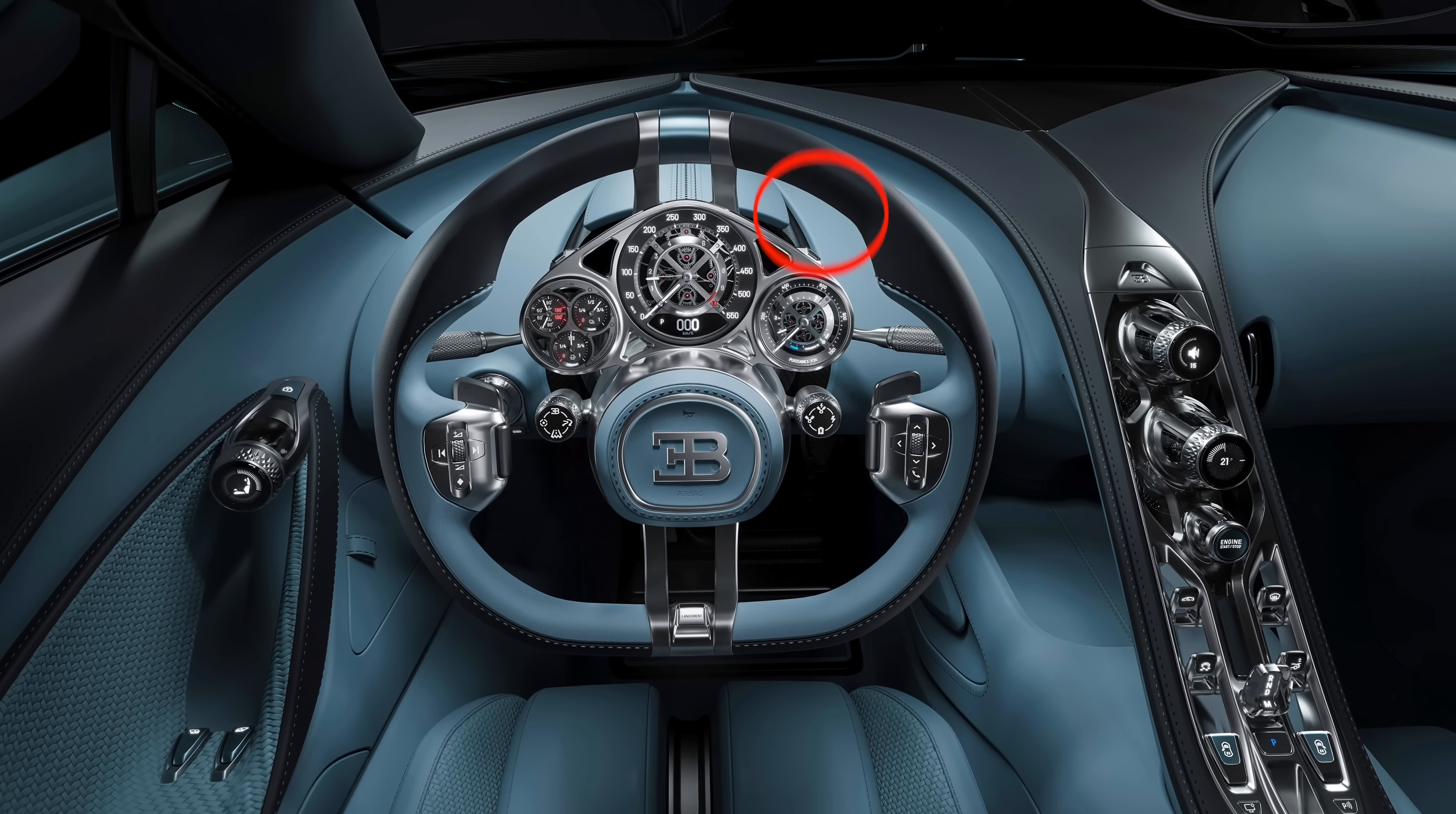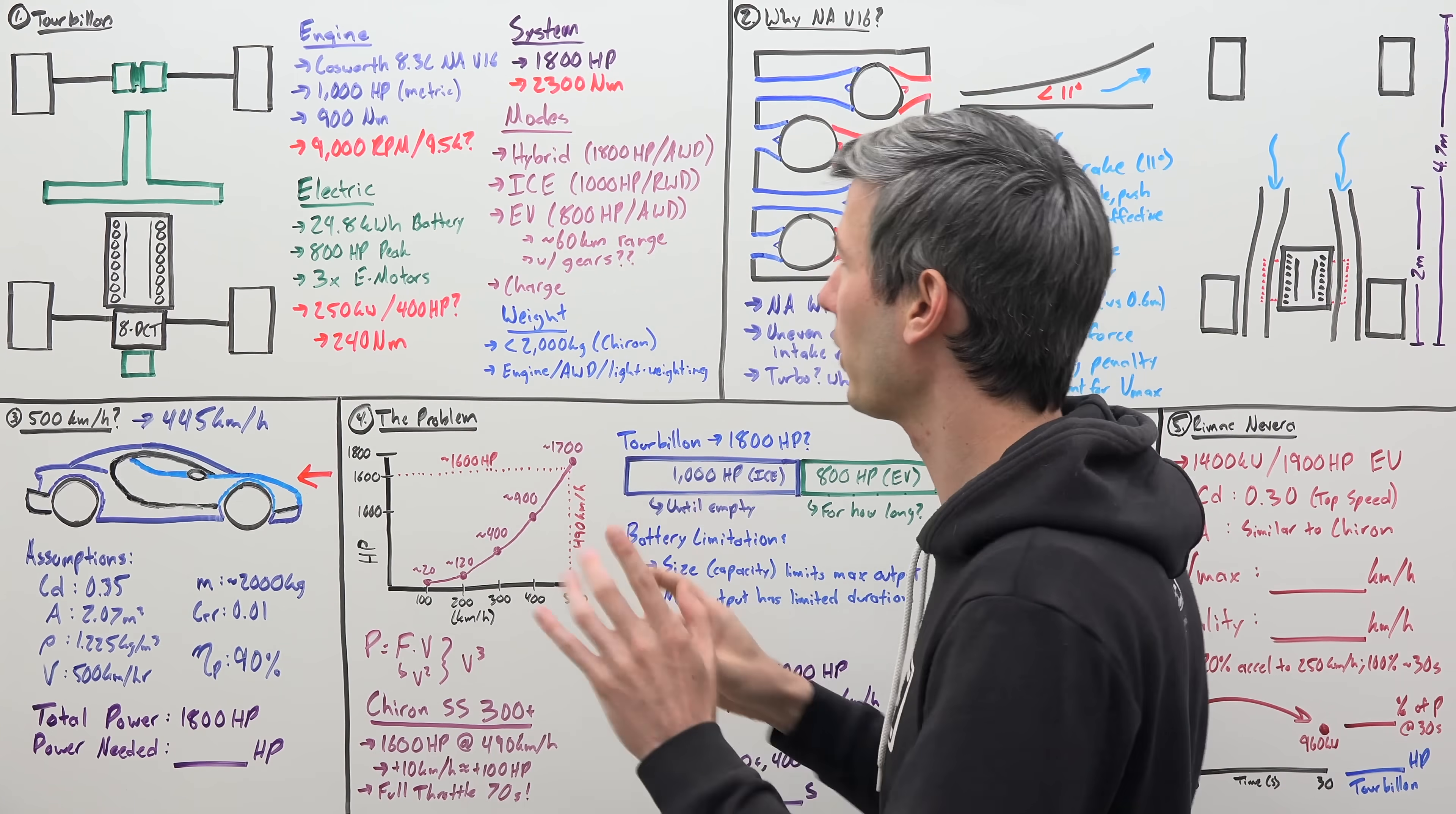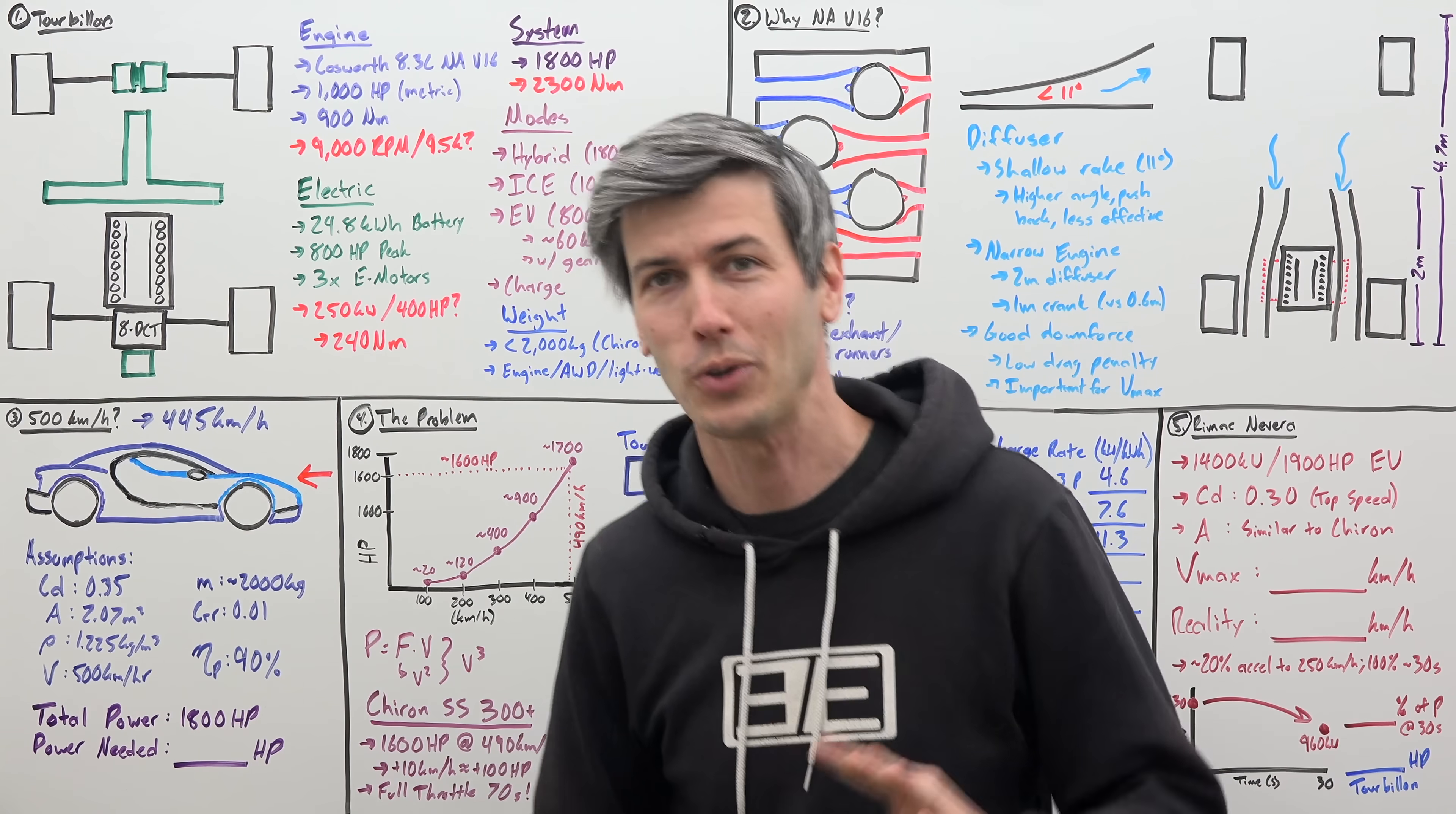The battery pack can only supply a maximum of about 600 kilowatts or 800 horsepower. So you have that power to play around with between these three motors, each capable of about 400 horsepower. Now, what's really exciting are the different drive modes. They can run it in hybrid mode where you're just running all three electric motors plus the combustion engine, 1,800 horsepower, all-wheel drive. Or you can shut off the electric system entirely and just run the V16. So 1,000 horsepower, rear-wheel drive.